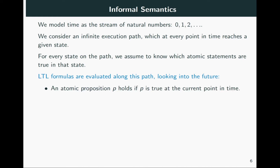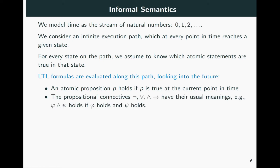If the formula is an atomic proposition, then it holds if it is true at the current point in time, which is initially at the beginning of the path. Since we know the truth value of the atomic proposition, we can establish this for formulas that are atomic propositions themselves. The case of propositional connectives is treated as one would expect. For example, Φ and ψ holds if Φ holds and ψ holds, and similarly, Φ or ψ holds if Φ holds or ψ holds.